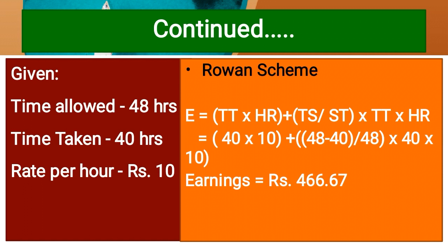Rowan Scheme: Earnings = Time Taken × Hourly Rate + (Time Saved / Standard Time) × Time Taken × Hourly Rate. Time taken = 40 hours, hourly rate = Rs. 10. Time saved = 48 - 40 = 8 hours. Standard time = 48 hours. Earnings = 40 × 10 + (8/48) × 40 × 10 = 400 + 66.67 = Rs. 466.67.